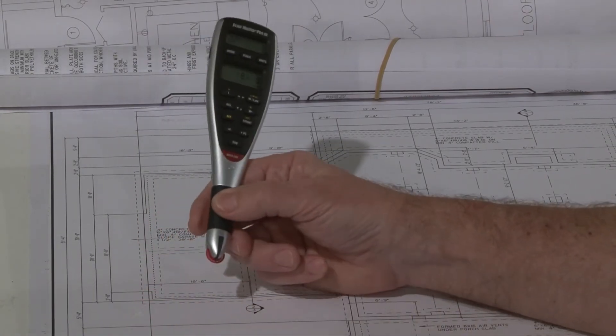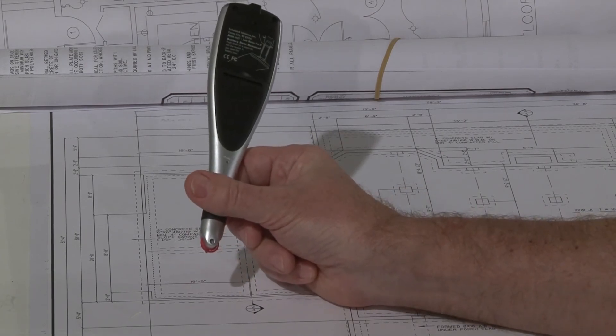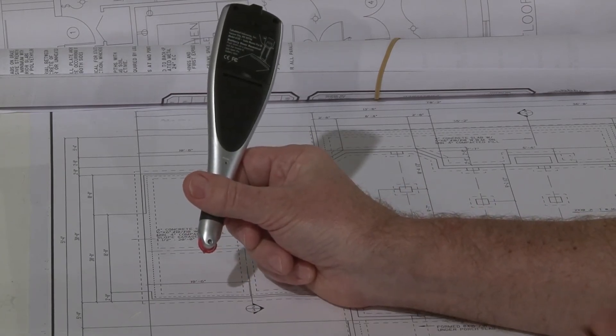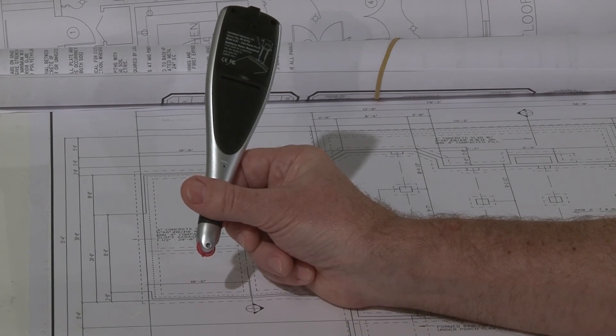There is also an adjustment screw that holds the red measuring wheel on. That's to allow you to set the tension properly so that there isn't any freewheeling of the wheel after you've completed the measurement and pick it up. You don't want any extra ticks adding distance to your roll.